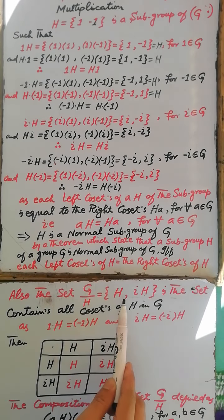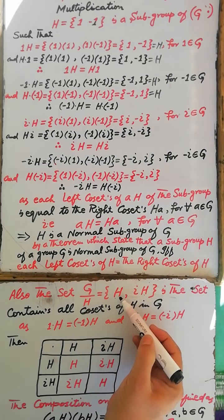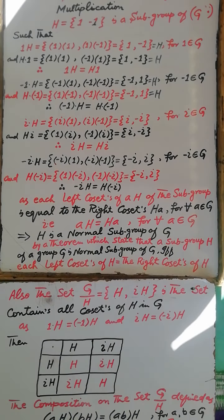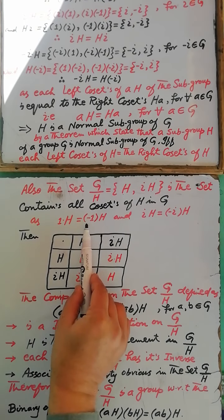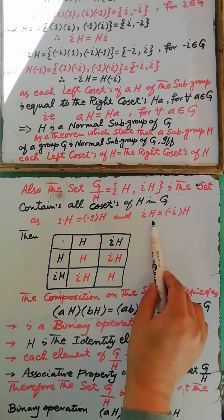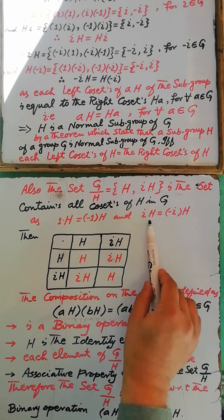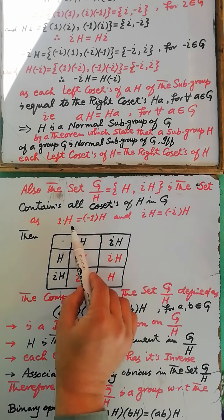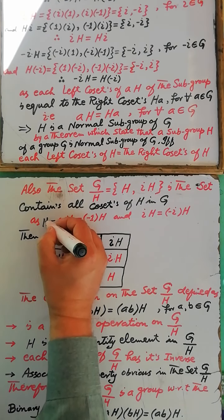We collect one representative from these cosets, which is iota·H. Therefore, collecting all distinct left cosets of the subgroup H in the group G, we have: 1·H = (-1)·H, which equals H, and iota·H = (-iota)·H. These two cosets are the same. So we write the set G/H = {H, iota·H}, where 1·H equals the coset H.